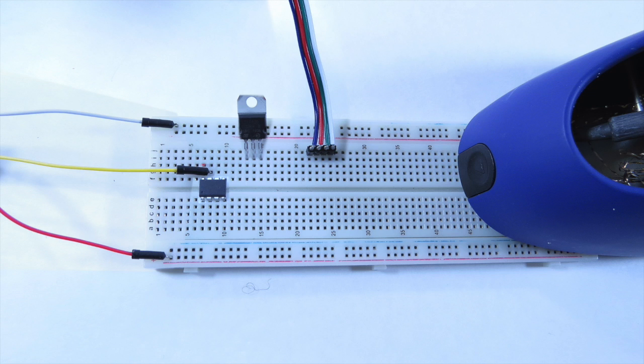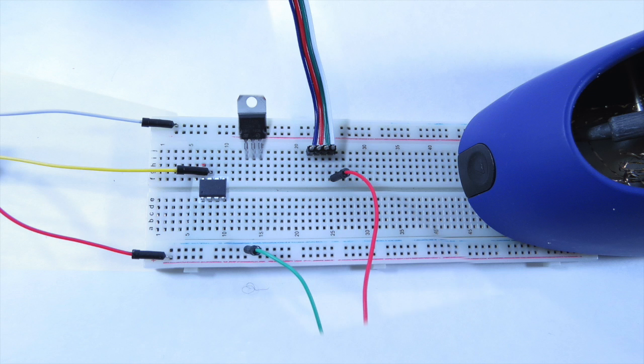The 5 volts coming from the receiver is not enough power to drive the 12 volt LEDs. So we will need to use a lipo for this. Positive wire from the lipo gets connected to the positive wire from the LED strip. And the negative wire from the lipo goes to the ground rail on your breadboard.